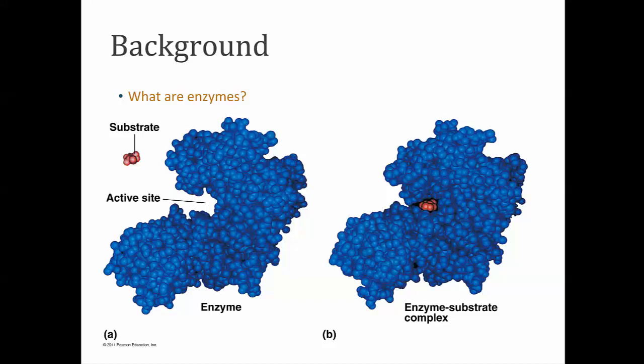That primary structure can be folded up into a beta pleated sheet or an alpha helix, which is the secondary structure. And those structures themselves can fold around again, binding in various ways, forming a tertiary structure. In some cases you have more than one tertiary structure coming together to form a quaternary structure, a very complex globular enzyme.